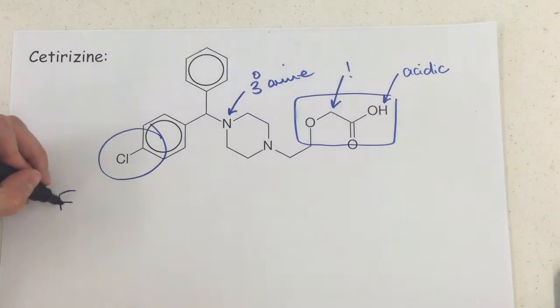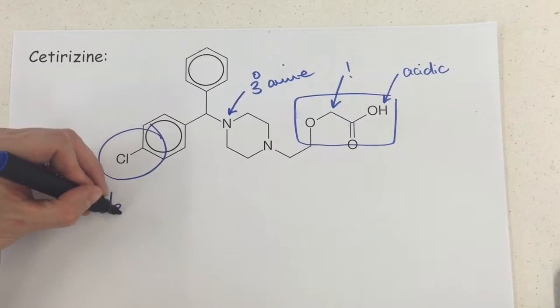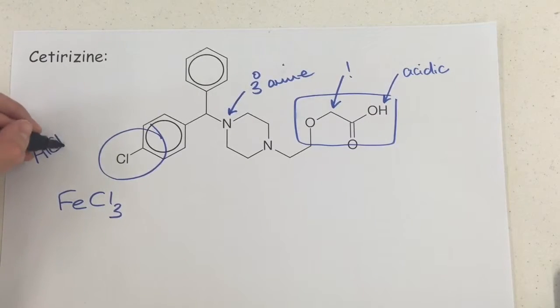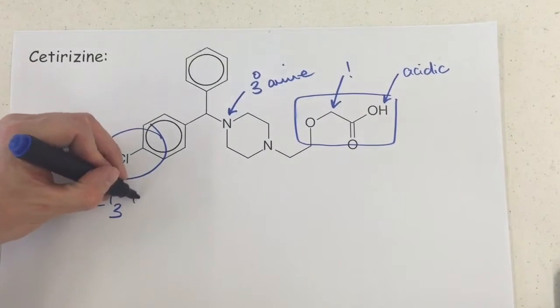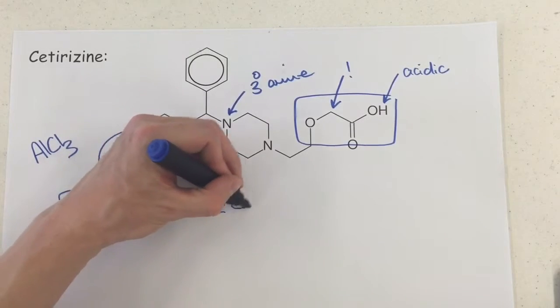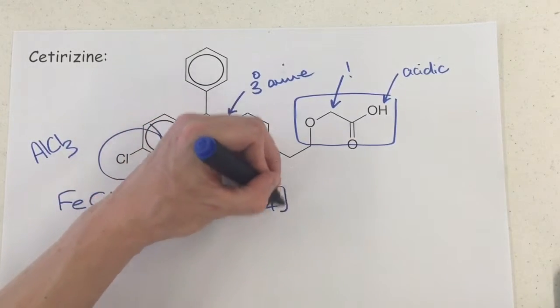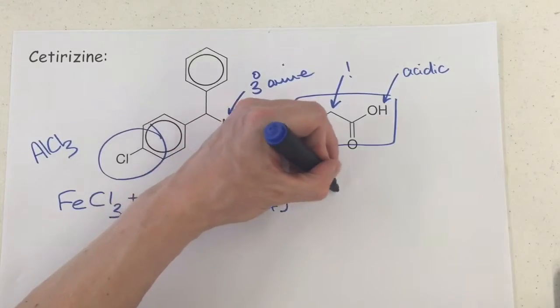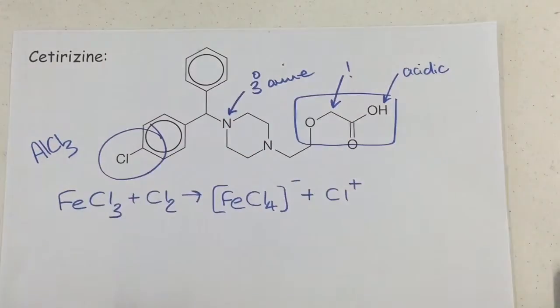Now the first thing you need is a halogen carrier, so you're going to either use FeCl3 or you can use AlCl3 for this, it doesn't really matter. And you're reacting this with Cl2 and what you form, you don't really need the square brackets but I do like to put them in for this bit, is FeCl4 minus and you also need some Cl+, like so.